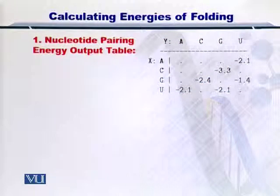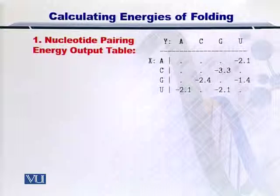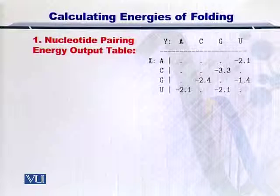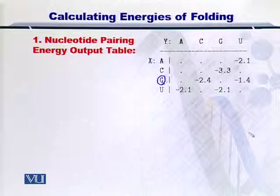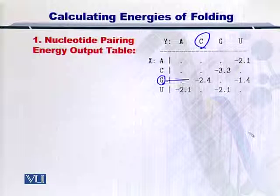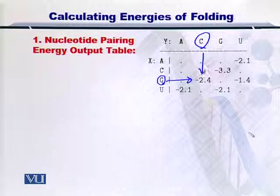Now we will see how to calculate this energy. We have the energy output table as given here, and you can see from this table that if G and C form a bond, then minus 2.4 kilocalories is given out.